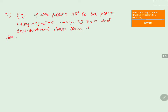When we observe the two planes: the first one, φ1, is x + 2y + 3z - 5 = 0, and the second plane, φ2, is x + 2y + 3z - 7 = 0. The two planes are similar in terms of their x, y, and z coefficients, but they differ by their constants.